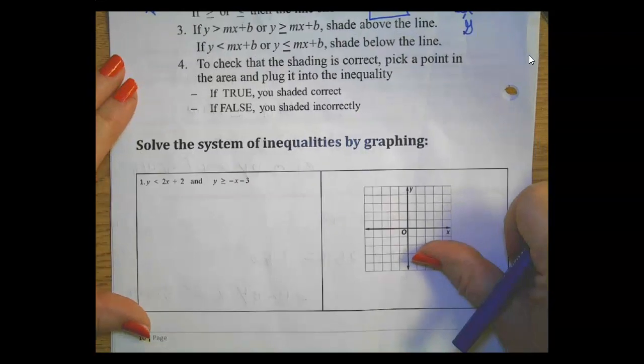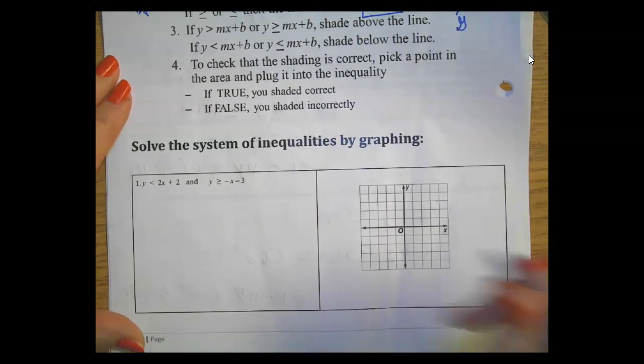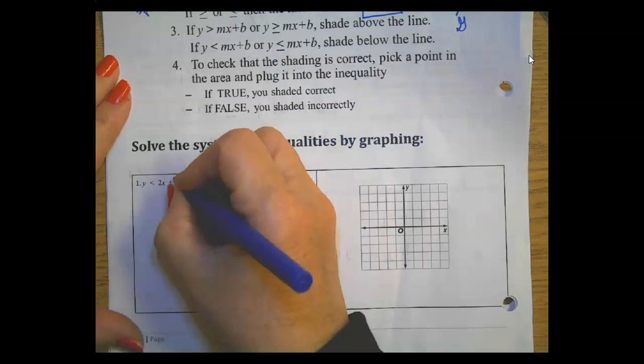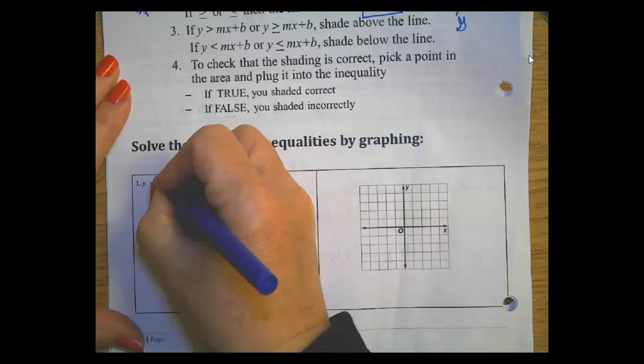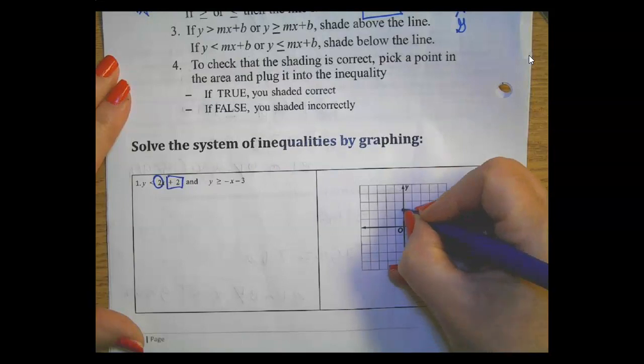You can do this on Desmos but I need to make sure you have this practice. Here is my b or my y-intercept. I'll box that out. And here's my slope. My y-intercept is a positive 2, so my slope I'll write as 2 over 1 because it has to be a fraction.